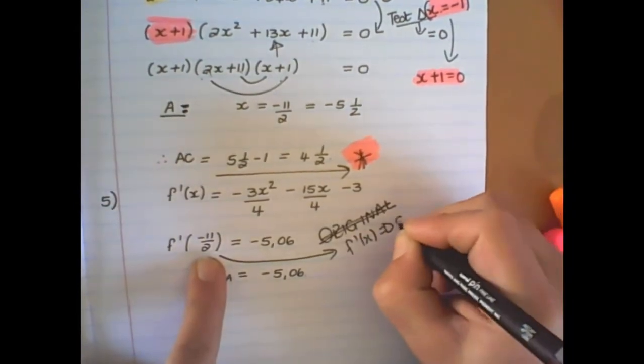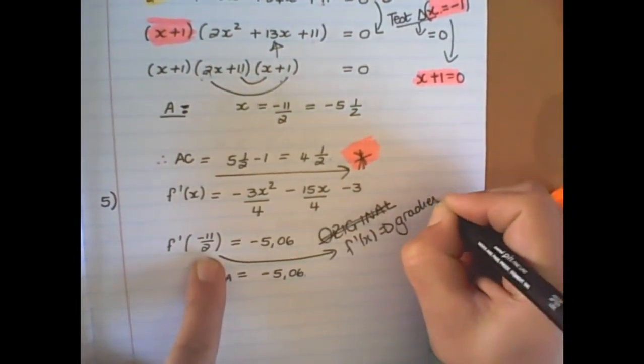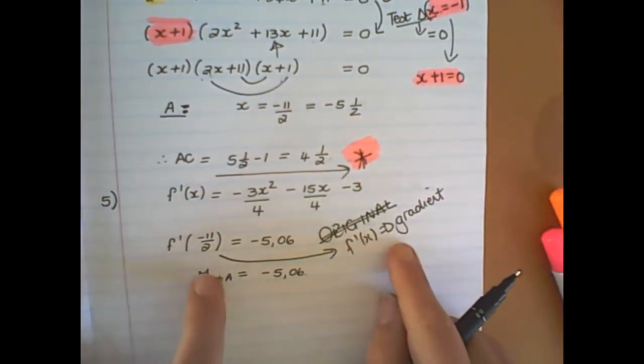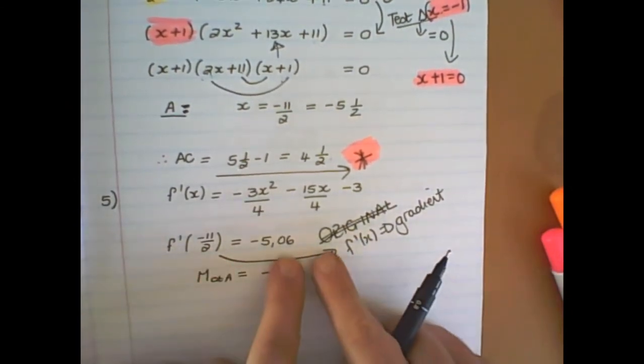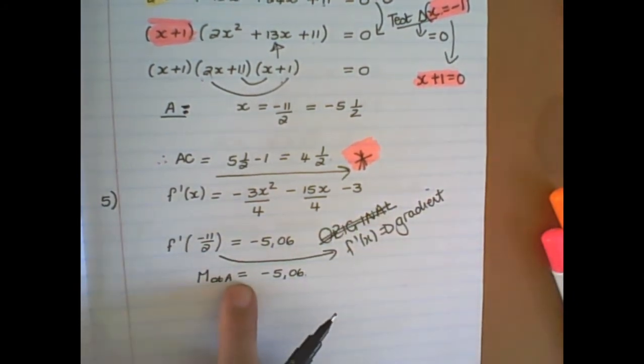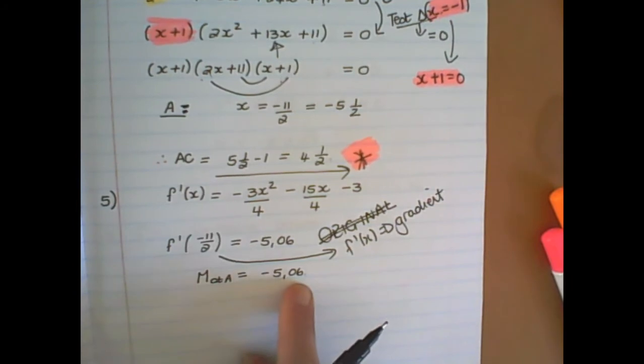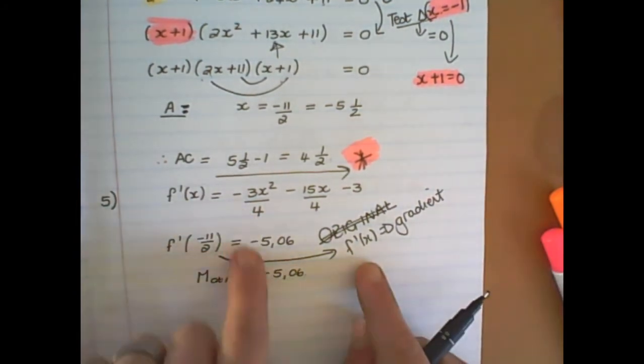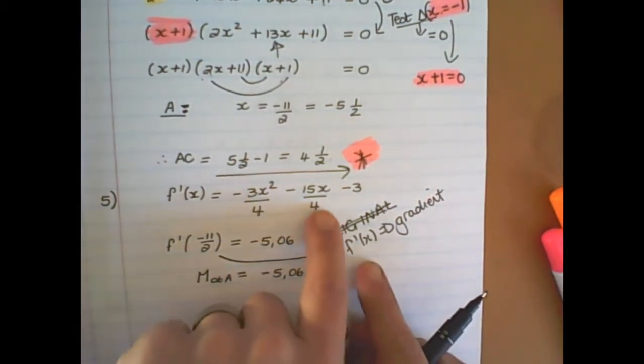Remember, we want to find the gradient. So we don't substitute it into the original. We don't want to find a y value. We want to find the gradient value at that point. So at point A, the gradient is negative 5.06. I just put in a negative 5 and a half into this equation.